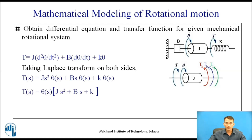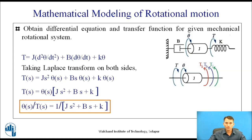Taking θ(s) common, we get the equation, and the transfer function — output upon input — is: θ(s) / T(s) = 1 / (Js² + bs + k). This is the transfer function of the rotational system.